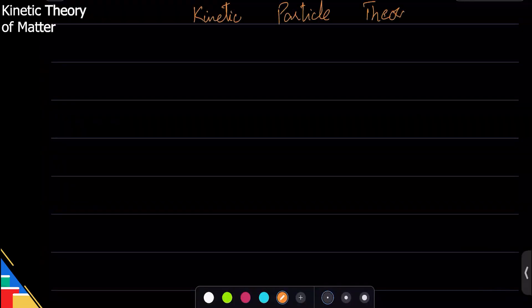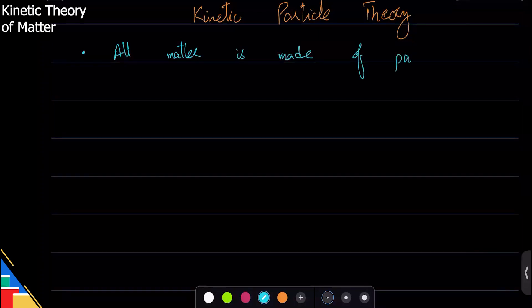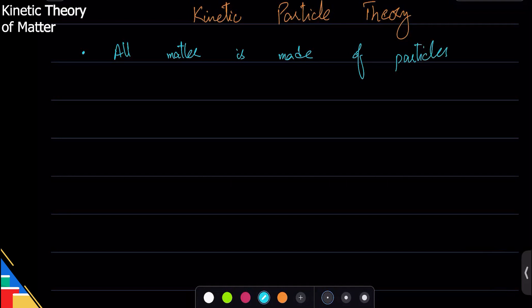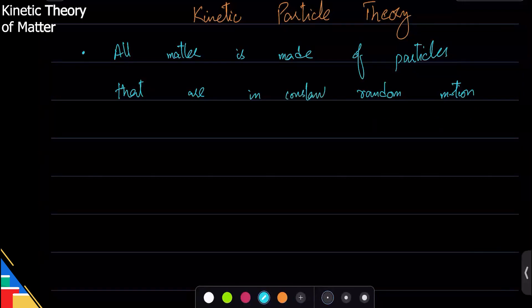The kinetic theory of particles is a very simple but very powerful theory. It helps us explain why solids are the way they are and why gases are the way they are — why does matter behave the way it does. The first idea is that all matter is made of particles. These are tiny small things, and they are moving all the time — in constant random motion.